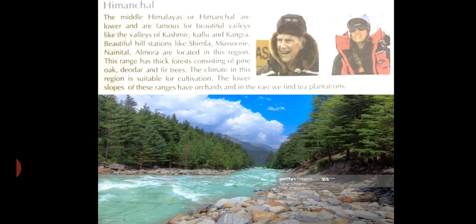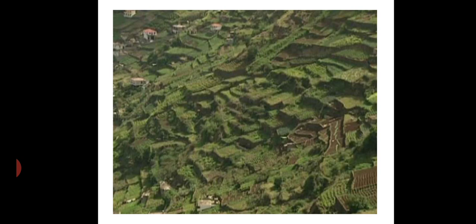Look at the image, children — this is one of the beautiful images of the Himachal range. This is the image of step farming, where the steps of the hills in the Himachal region are used for cultivation. Step farming is famous in this area. See how beautifully they are utilizing the slopes of the hills by cutting them in steps for cultivation.